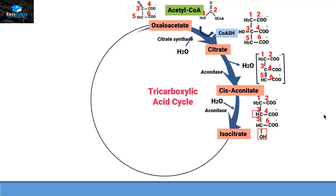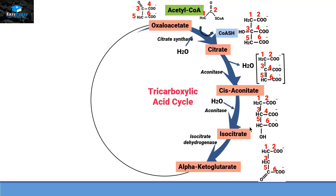Isocitrate, with the help of an enzyme called isocitrate dehydrogenase, will convert itself into alpha-ketoglutarate with the release of carbon dioxide from position four. Since the enzyme is a dehydrogenase, it removes hydrogen from isocitrate, generating a double bond with oxygen on carbon number five. This is an oxidative reaction, so the hydrogen is taken up by NAD+, converting it into NADH.